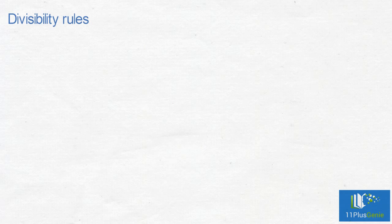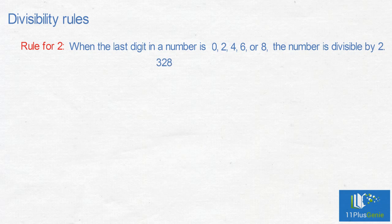Rule for 2: When the last digit in a number is 0, 2, 4, 6 or 8, the number is divisible by 2. 328 is divisible by 2. 379 is not divisible by 2.